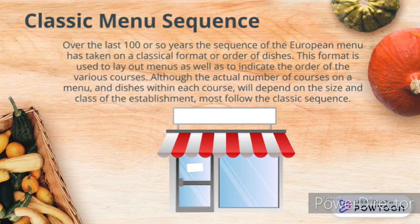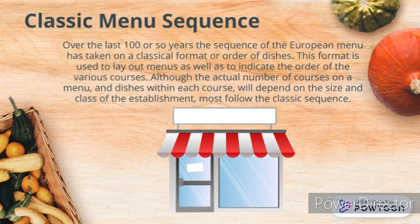There is a so-called classic menu sequence. Over the last 100 or so years, the sequence of the European menu has taken on a classical format or order of dishes. This format is used to lay out menus and to indicate the order of the various courses, although the actual number of courses and dishes within each course will depend on the size and class of the establishment.